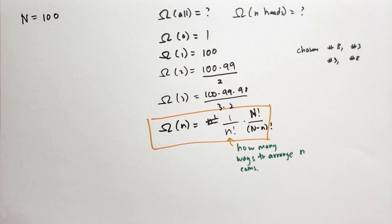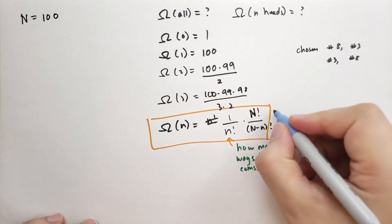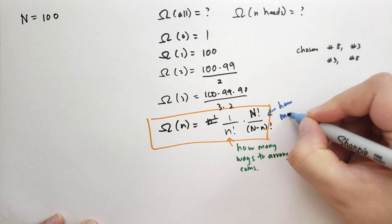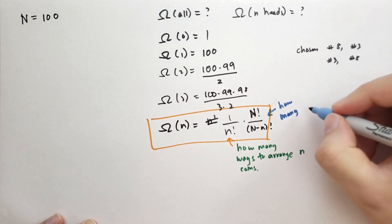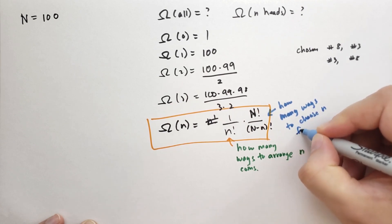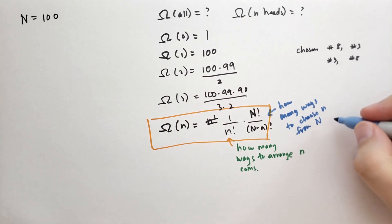So this n factorial is how many ways to arrange n coins. And this number here is how many ways to choose n from n. We're going to say distinctly. Meaning that choosing 8 and then 3 or 3 and then 8 is different. Now this formula is very common in probability.